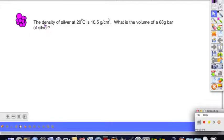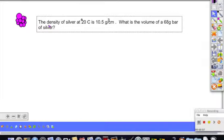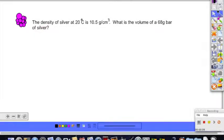Okay, here we have an example where we're going to use the density formula again. Given the density of the substance, which in this case is silver, at this particular temperature is 10.5 grams per cubic centimeter.